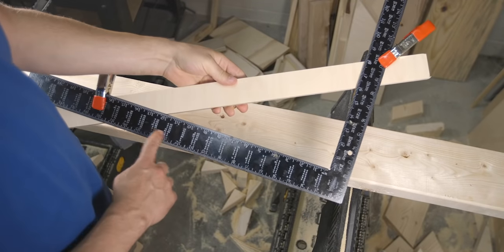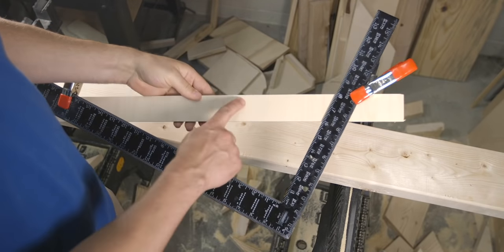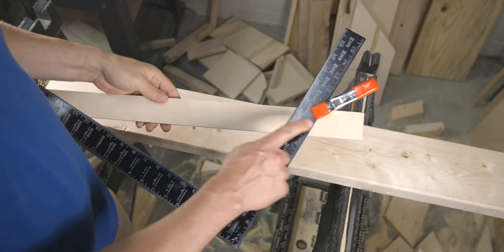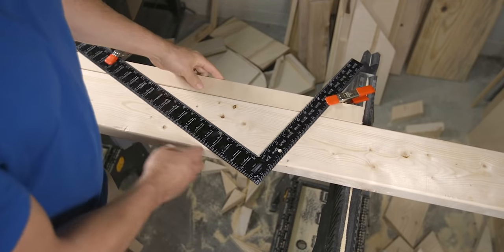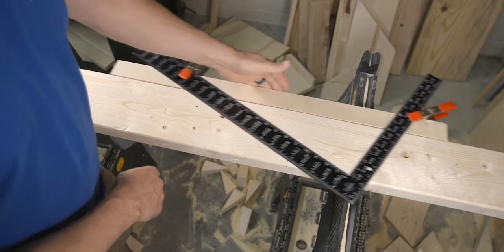The majority of our layout will be done today using the framing square that's actually attached to a piece of wood with some simple clamps. What this will do is allow the square to move freely and accurately over the lumber.